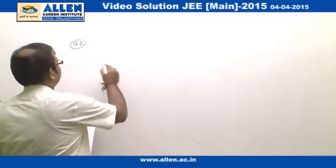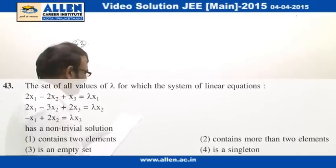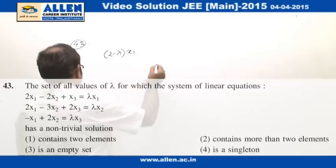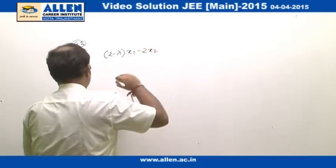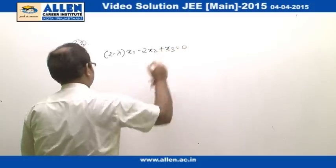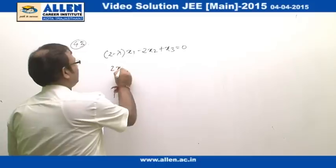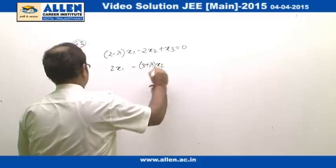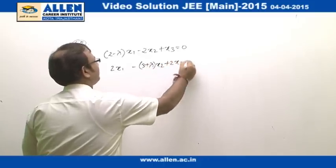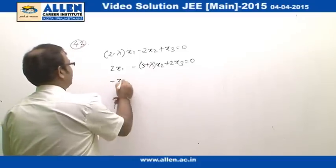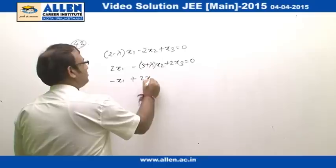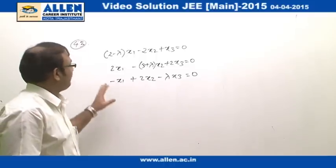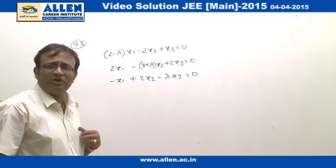In question number 43 we are given a system of homogeneous equations, which we rewrite as: (2−λ)x₁ − 2x₂ + x₃ = 0; 2x₁ − (3+λ)x₂ + 2x₃ = 0; and −x₁ + 2x₂ − λx₃ = 0. We need to find the value of λ for which this system has a non-trivial solution.